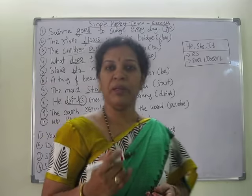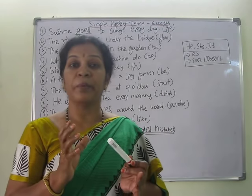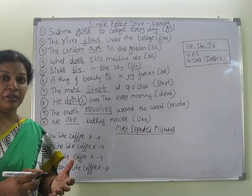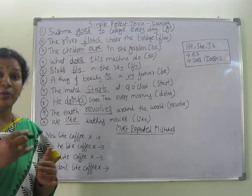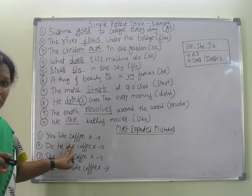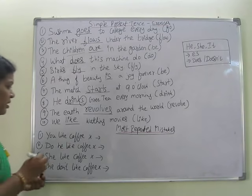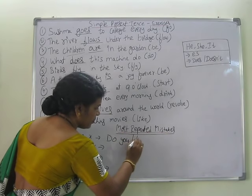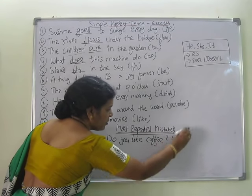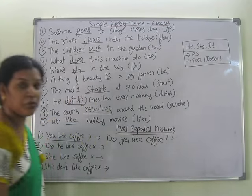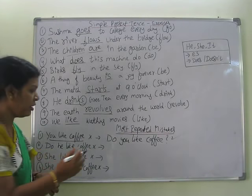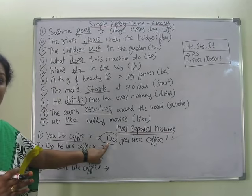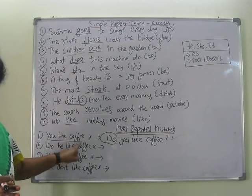Now let's look at the most repeated mistakes. Many people make mistakes in present-tense sentences. For example: 'You like coffee?' — this is wrong as a question. In present tense, whenever you want to ask a question, you need to start with 'do'. So the correct sentence is: Do you like coffee? Don't say 'you like coffee' — say 'do you like coffee?'